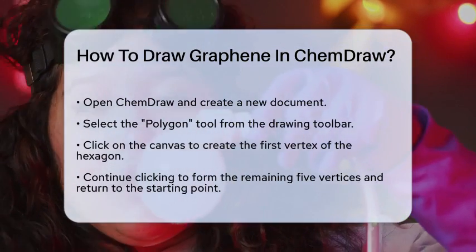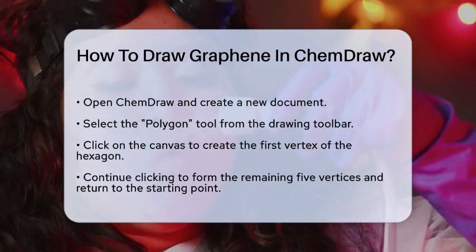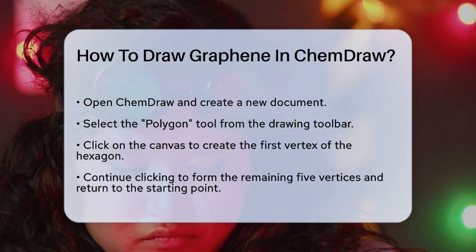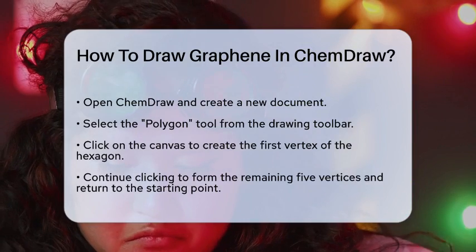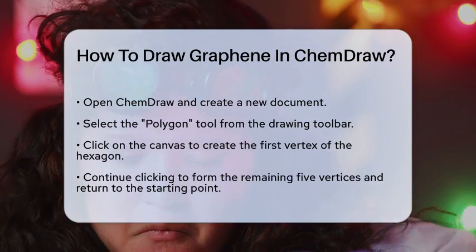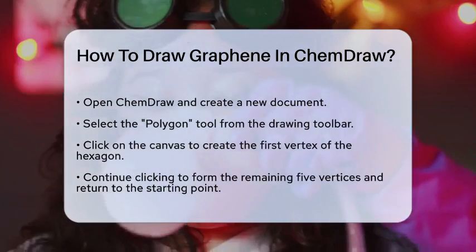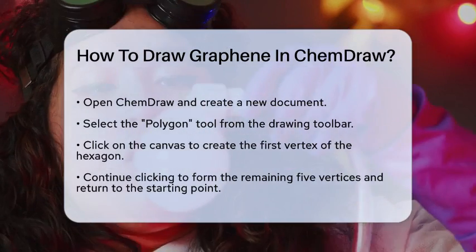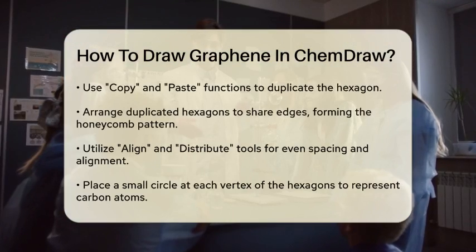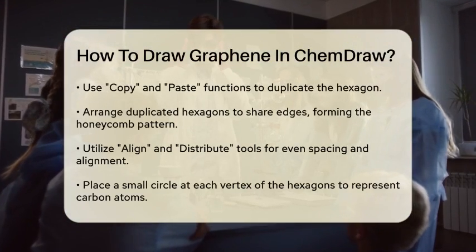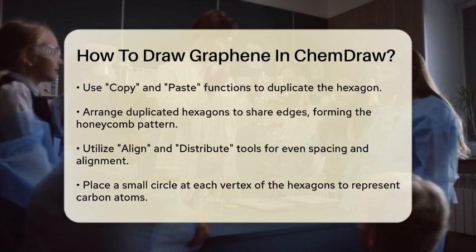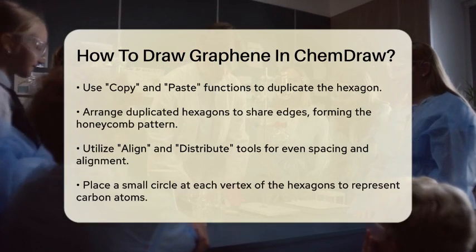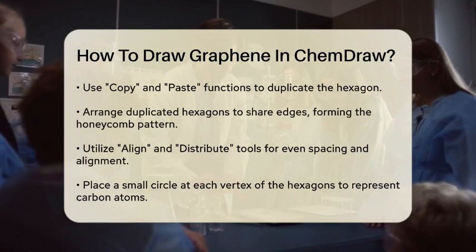First, open ChemDraw and create a new document. You will want to start by selecting the Polygon tool from the drawing toolbar. This tool allows you to create the hexagonal shape that represents the carbon atoms in graphene. Click on the canvas to create the first vertex of the hexagon, then continue clicking to form the remaining five vertices, ensuring that you return to the starting point to complete the shape.